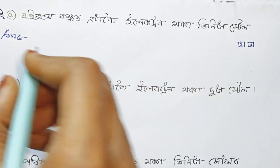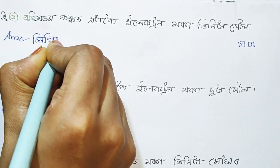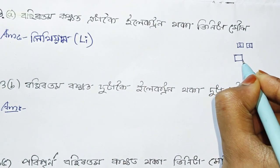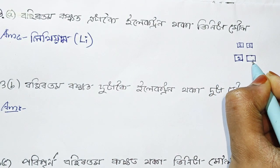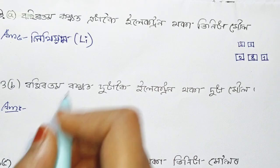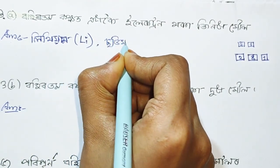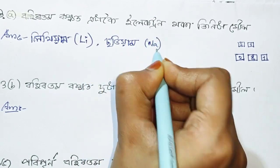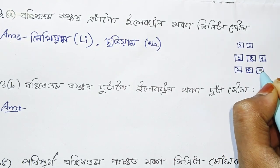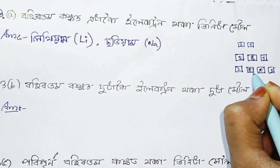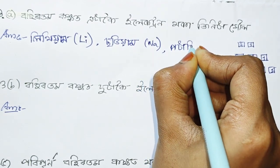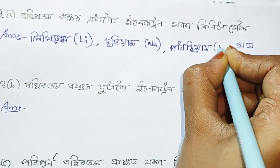If it is sodium — sodium has the electronic configuration 2, 8, 1. How does it go from 2 to 1? The next one is potassium. What is potassium? Potassium, K.